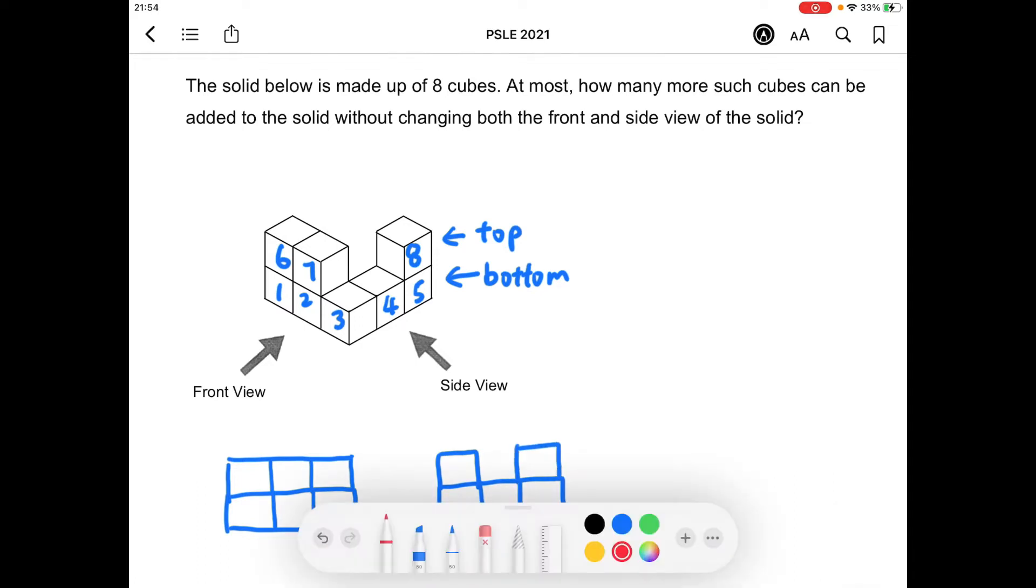It will be easier if we approach this from the side view first. We know that we can definitely add four more cubes at the bottom layer.